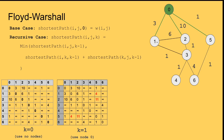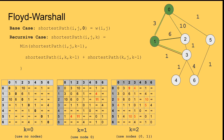Now repeating with node 1 also allowed as an intermediate, I can use both nodes 0 and 1. For example, 0→2 used to be 10, but now going 0→1→2 gives 9, so it updates. Also 2→5 was 11; now going 2→1→0→5 costs 6 plus 3 plus 1, which is 10, so it updates to 10.